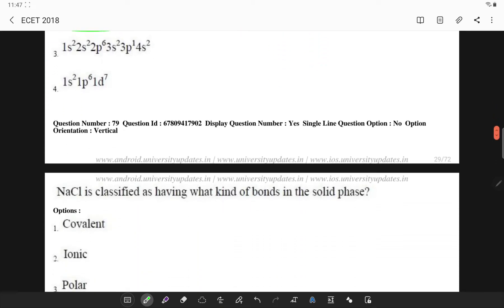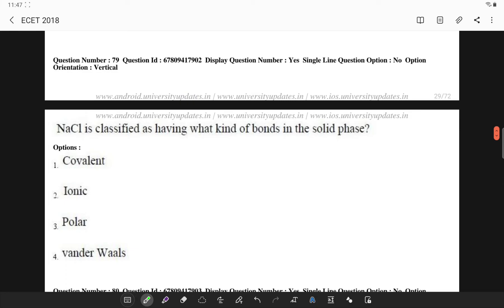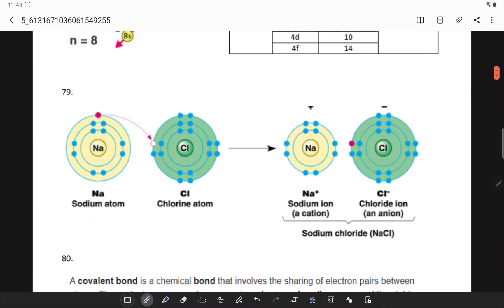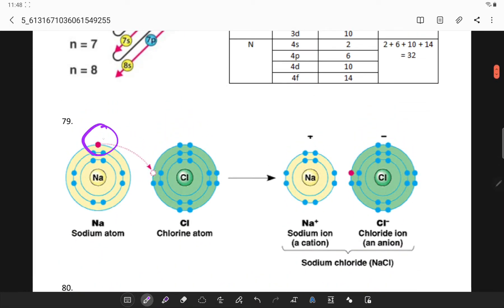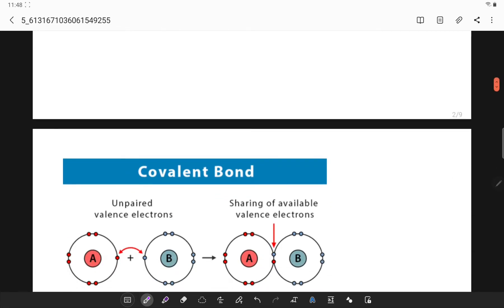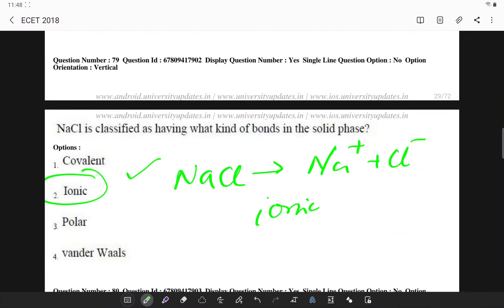Let's go to the next question. So sodium chloride is classified as having what kind of bonds in solid phase? This very simple question. NaCl is a classical example of ionic bond Na+ Cl-. So the answer is 2. Sodium and chlorine, you get sodium chloride in which sodium ion is cation and chlorine is anion.